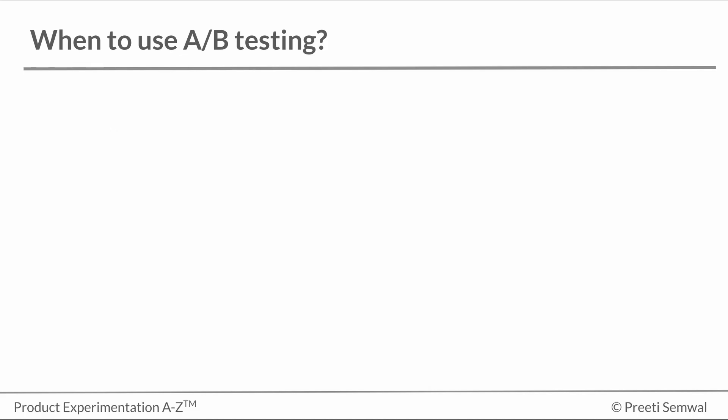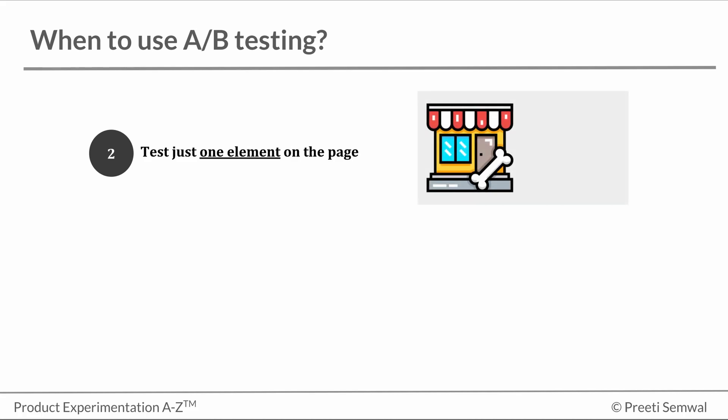A-B testing is also used when only one element is up for debate. For example, a pet store running an A-B test on their site might find that 85% more users are willing to sign up for a newsletter if they use the image of a cartoon mouse than if they use an image of a snake.